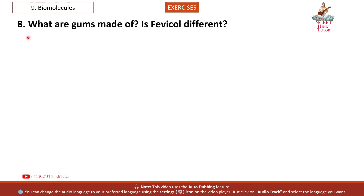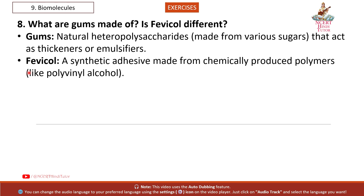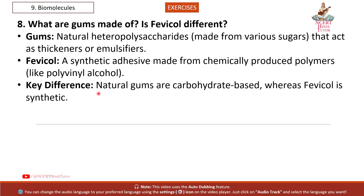Question 8: What are gums made of? Is Fevicol different? Answer. Gums: natural heteropolysaccharides made from various sugars that act as thickeners or emulsifiers. Fevicol: a synthetic adhesive made from chemically produced polymers like polyvinyl alcohol. Key difference: natural gums are carbohydrate-based, whereas Fevicol is synthetic.